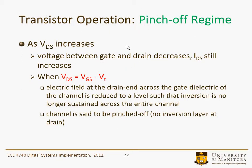In the pinch-off region, what happens when VDS increases is the voltage between the gate and the drain decreases. IDS still increases. When VDS is exactly equal to VGS minus VT, the electric field at the drain end across the gate dielectric of the channel is reduced to a level such that the inversion layer is no longer sustained across the entire channel — it's totally gone at the drain part of the channel. The channel is said to be pinched off; there's no inversion layer at the drain.